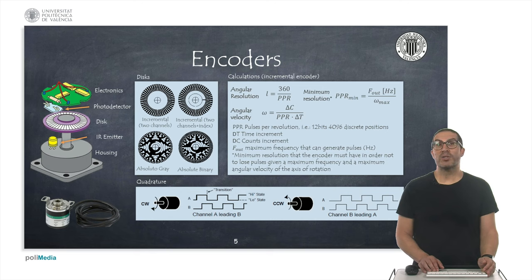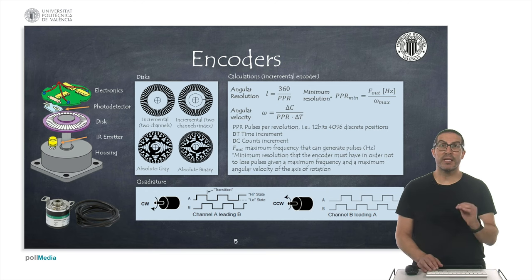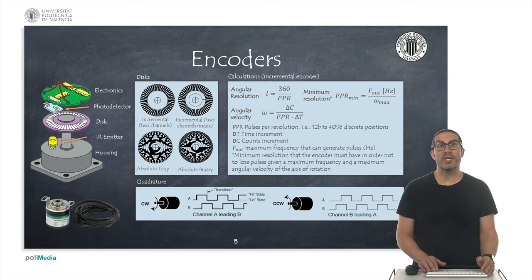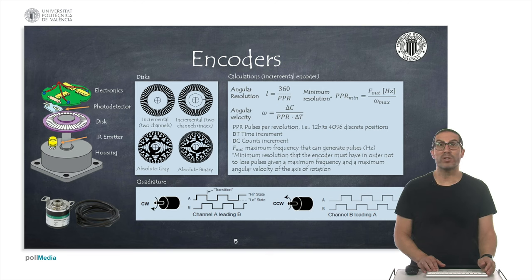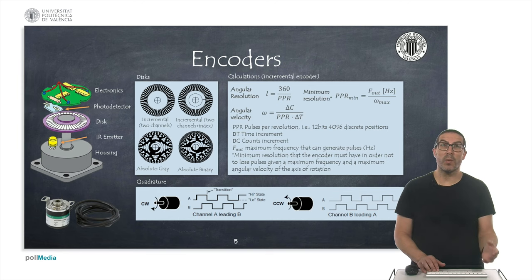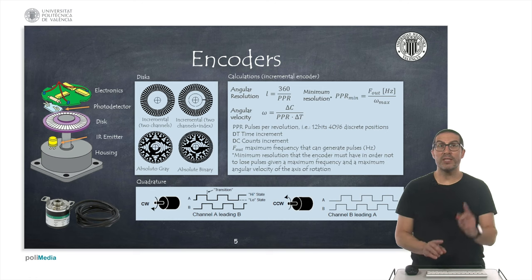Encoders are optical sensors that transform the mechanical energy of a rotation into an electrical signal by using a photodetector to detect the light emitted by an infrared emitter. This light passes through a disk attached to the encoder axis. Here I show what an encoder looks like internally and the different kinds of disks depending on whether it is an absolute or incremental encoder. In the figure below we see how an incremental encoder works, providing two signals A and B, where depending on whether rotation is clockwise or counterclockwise, one signal precedes the other, detectable from the rising and falling edges.